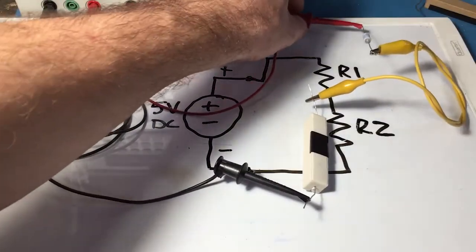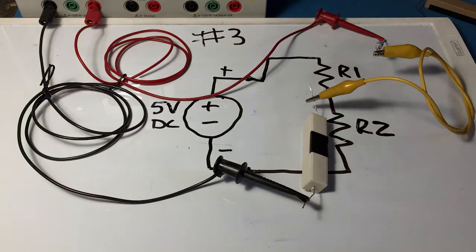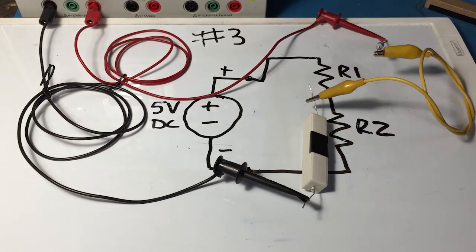And your task is going to be to figure out what R2 is and figure out the power dissipated in the circuit.